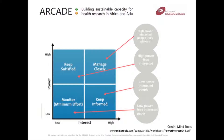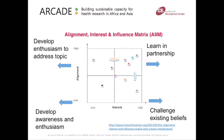The last quarter of the grid — where you will probably direct least effort — is where stakeholders who are neither influential nor interested in your particular issue will go. As with any stakeholder mapping process, it will be important to review this over time and map any change in behaviour, attitude or level of influence.